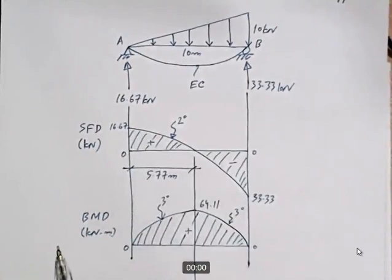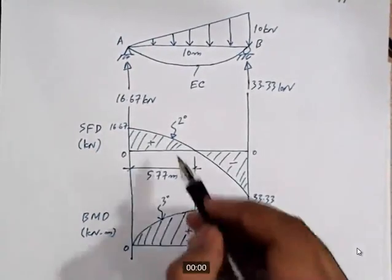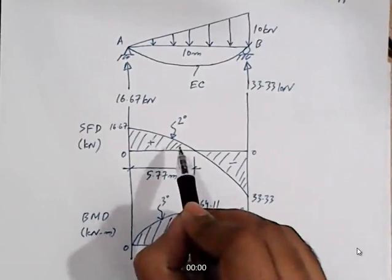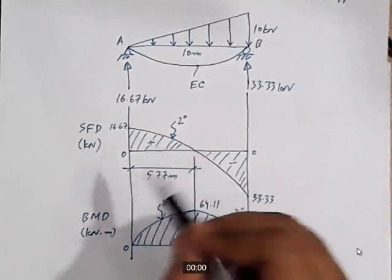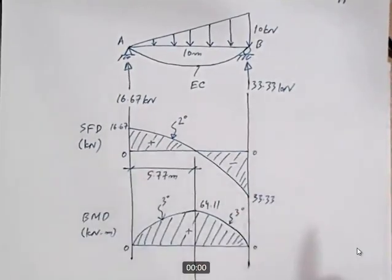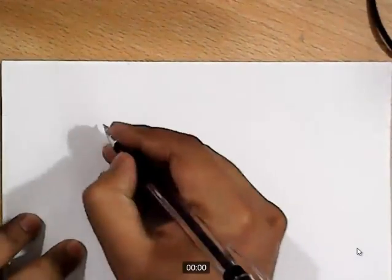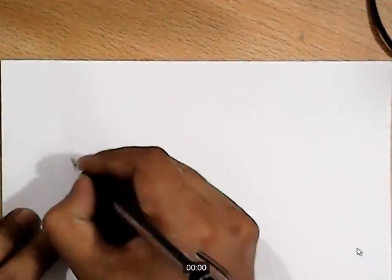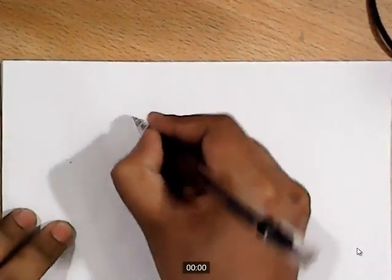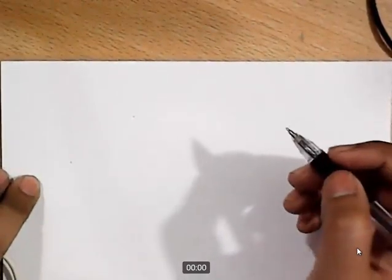Now, a lot of students are not clear about how the slope is increasing, and how in some other cases we consider an increasing slope. So let me explain what type of slope is increasing and what type of slope is decreasing. For example, we have two points — one point here and another point here — and we want to join these two points with an increasing slope.